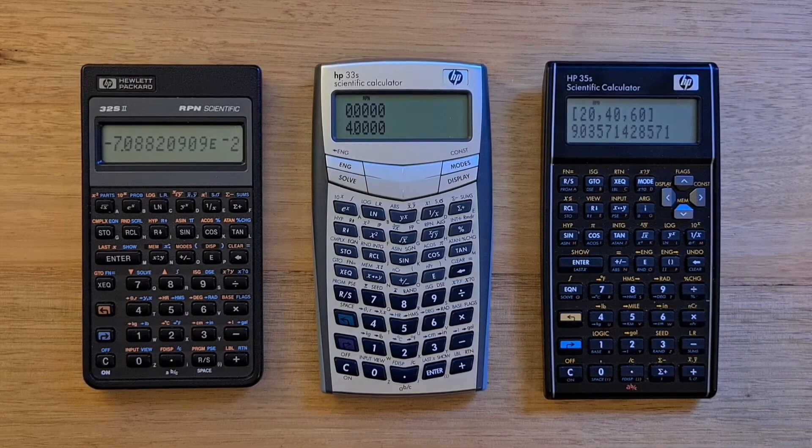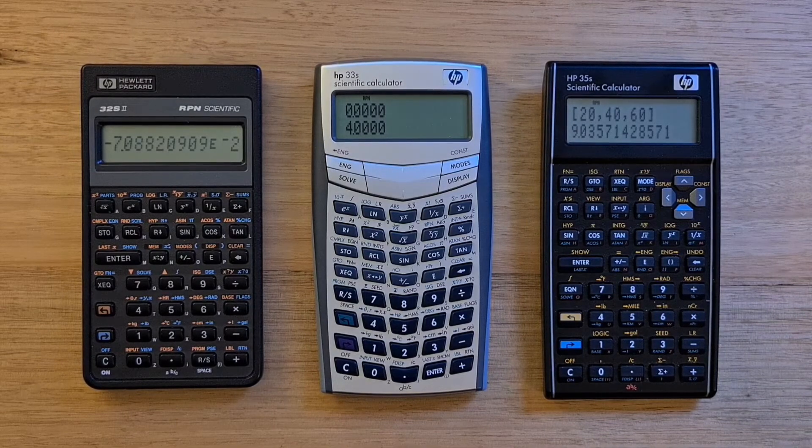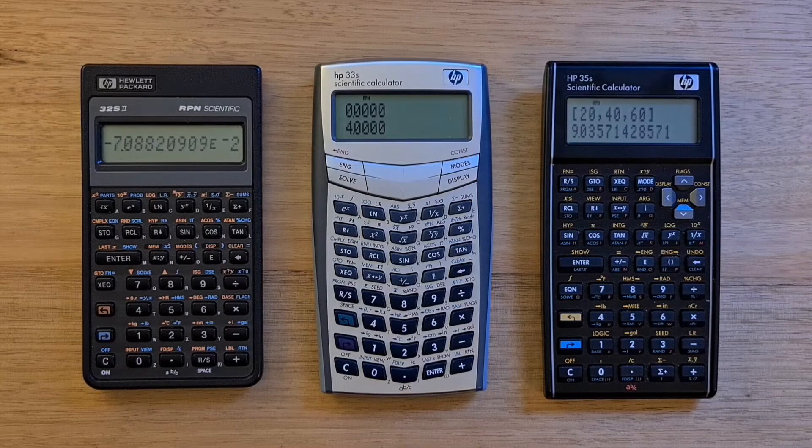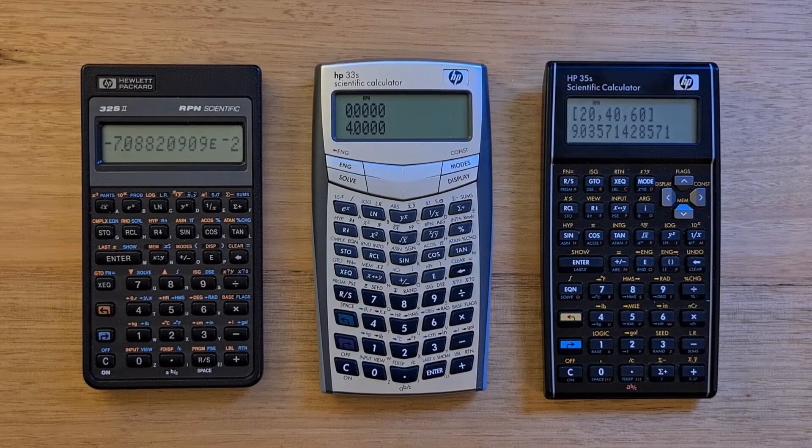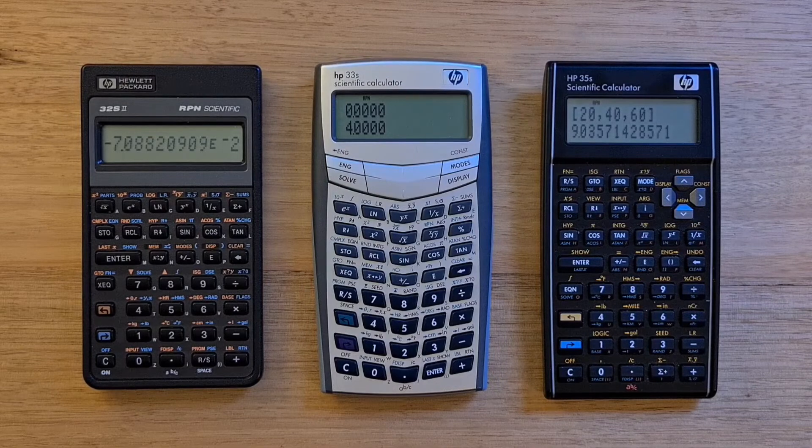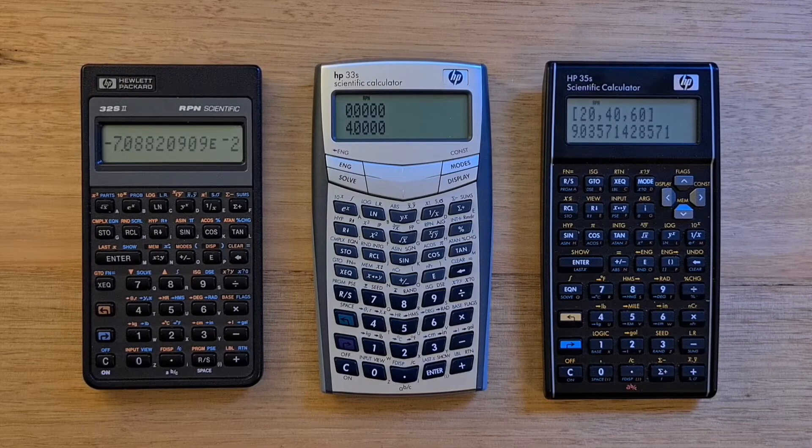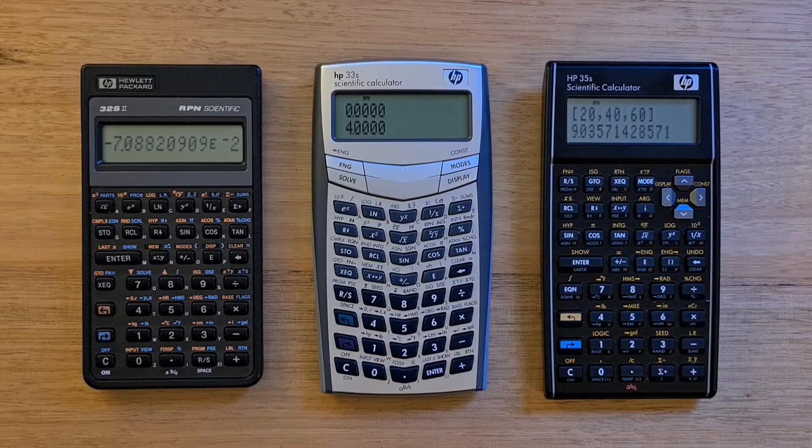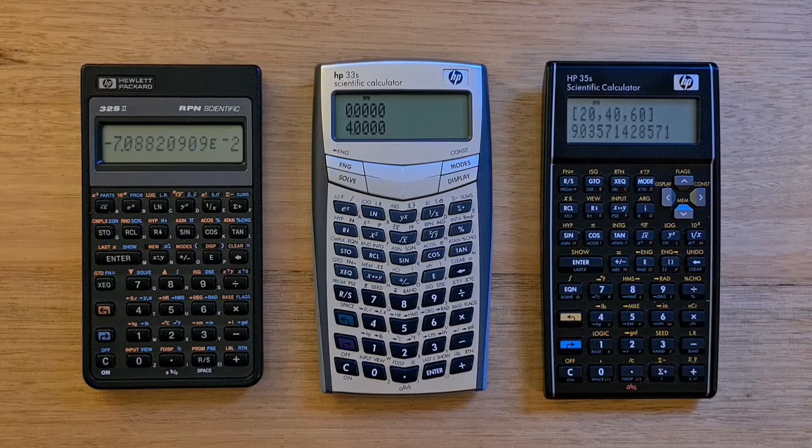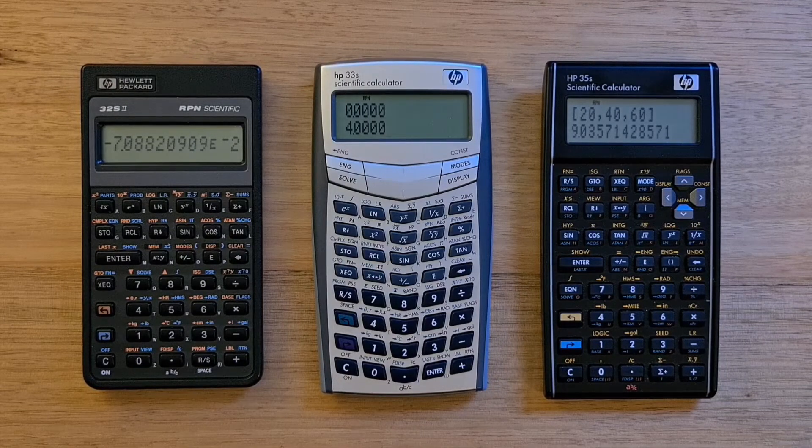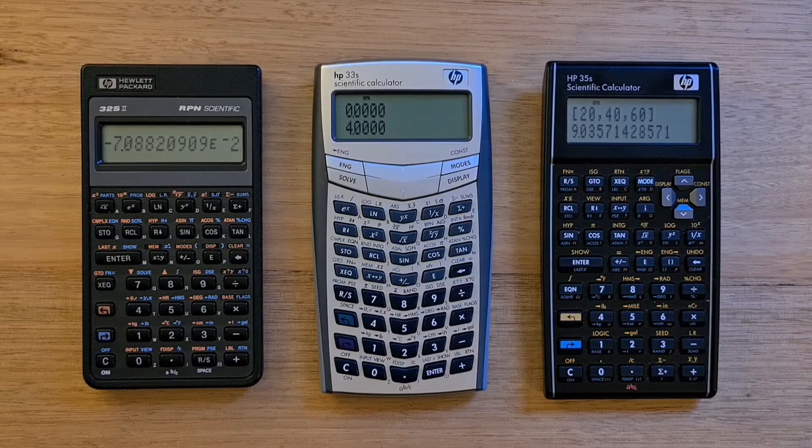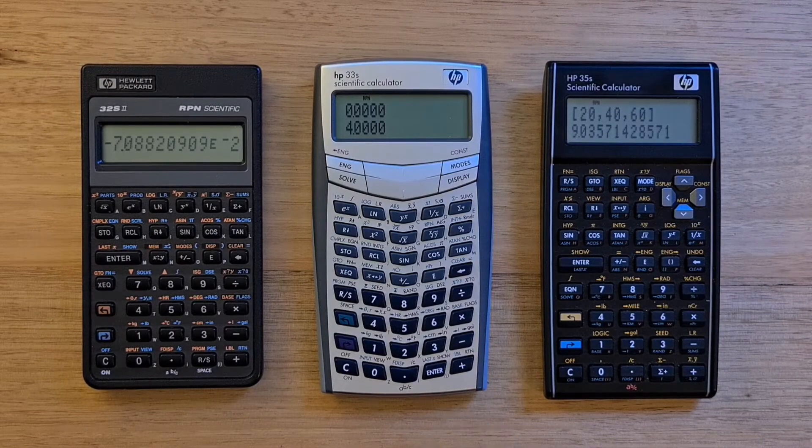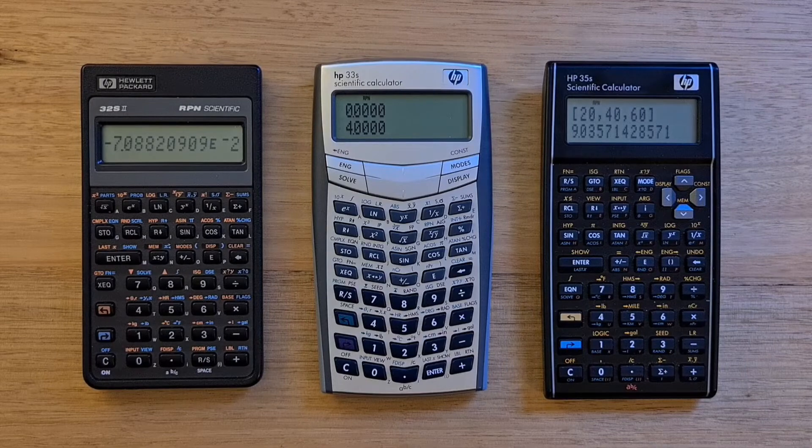One area where these calculators differ is around their support for algebraic mode. The 32S2 only supported RPN. In the Pioneer series, there was a whole separate set of algebraic scientific calculators such as the 20S. It was a new approach for the 33S to support both RPN and algebraic entry. Developing a dual mode calculator is inherently tricky because one area this plays itself out is on the keyboard design. Ideally, if you're using algebraic mode, you would expect primary parentheses keys as well as an equals key. But you'll notice that the 33S has neither of these.